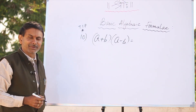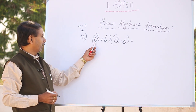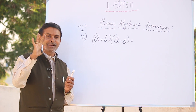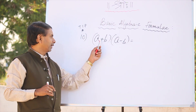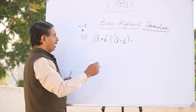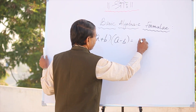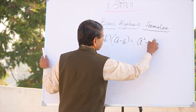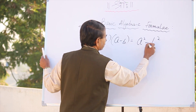A plus b into a minus b is equal to what? What is the answer? A square minus b square.